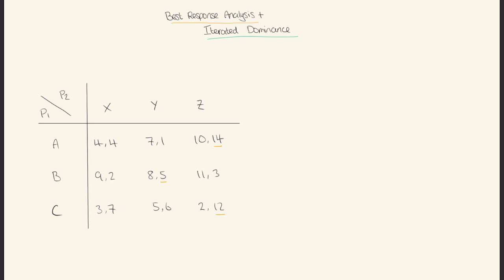Now we do the same the other way: if player two chooses option X, what would player one play? Instead of looking horizontally for values, we look vertically, because player two chose X so player one has the choice of A, B, and C. We ignore player two's payoffs and look at player one's values — four, nine, and three. Nine is clearly the highest, so we have another indicator point here.